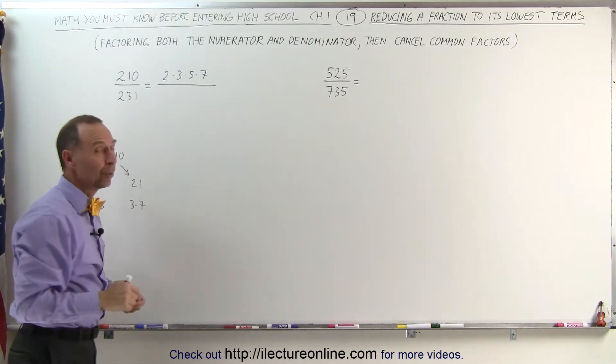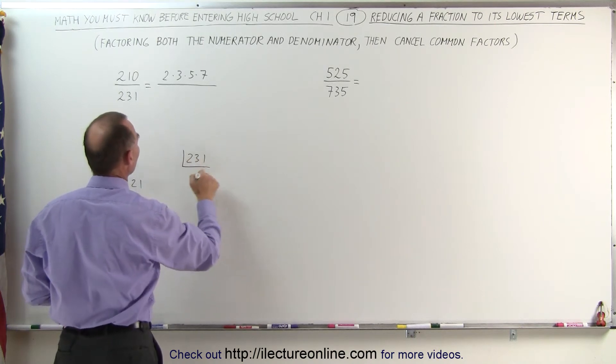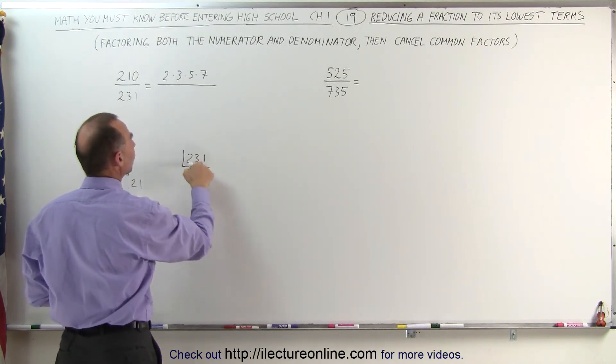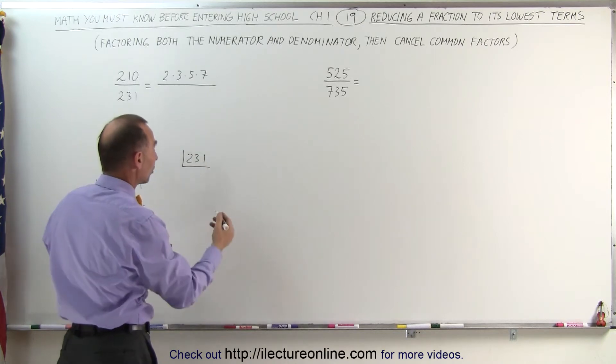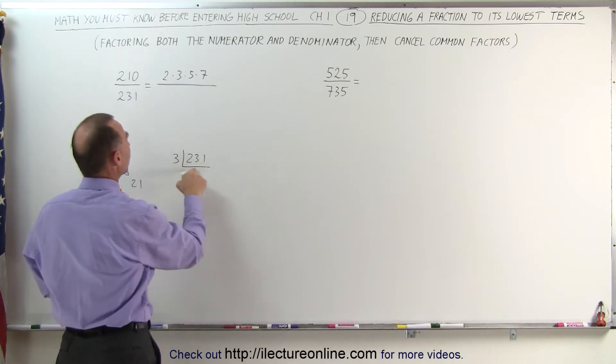by 231, which can also be factored. So let's try that. 231. Here we're going to use this method. We can see that the sum of these terms add up to 6, which is a multiple of 3. That means this can be divided by 3.